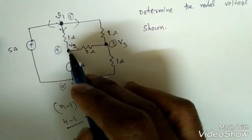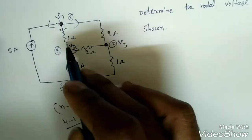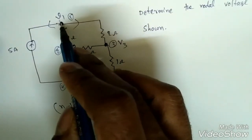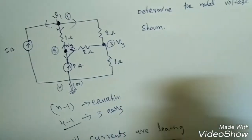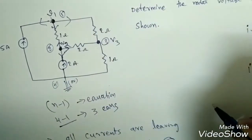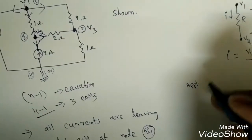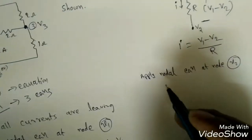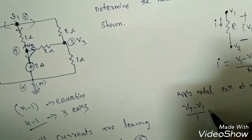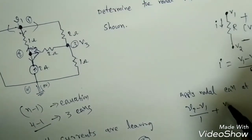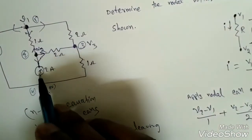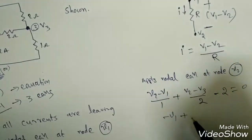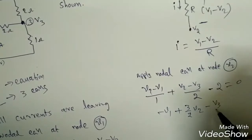Applying the nodal equation at node V2, where V2 is the dominant voltage: (V2 minus V1)/1 plus (V2 minus V3)/2 minus 2 equals 0, since the 2 ampere source is entering. Rearranging: minus V1 plus (3/2)V2 minus V3/2 equals 2. This is equation 2.